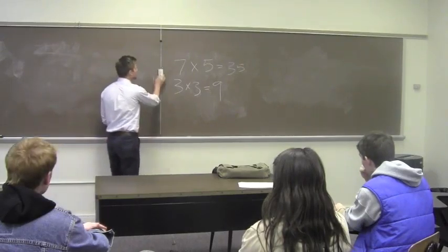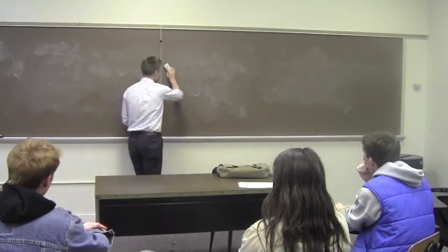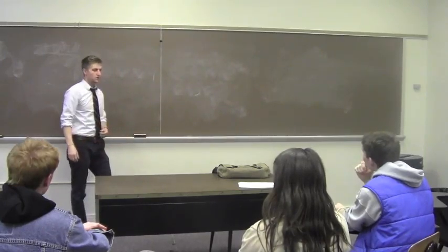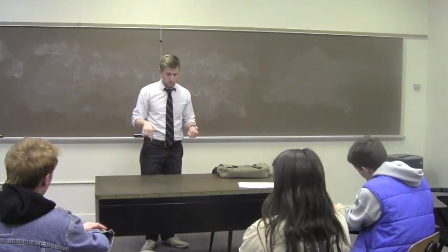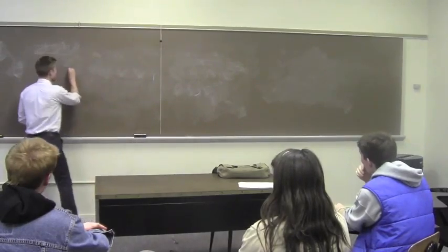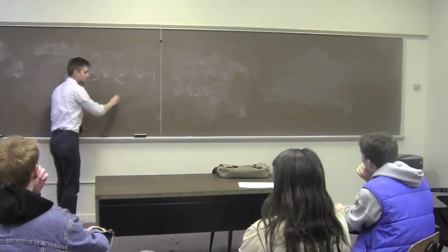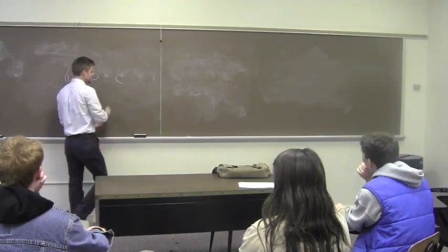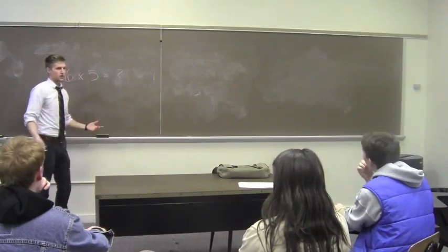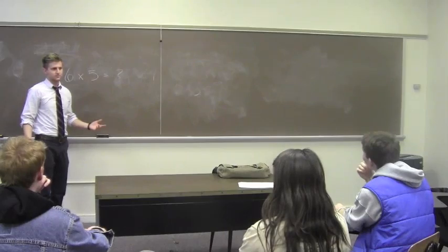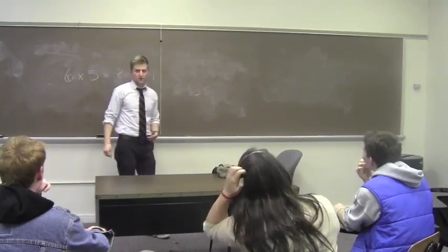Today we're talking about single variable equations. Do we all remember what a variable was? A variable is something that we're trying to solve for, a symbol that represents something. So let's talk about six times five equals C. Let's replace C with a question mark. What's question mark equal? Thirty. Right, question mark also equals six times five.